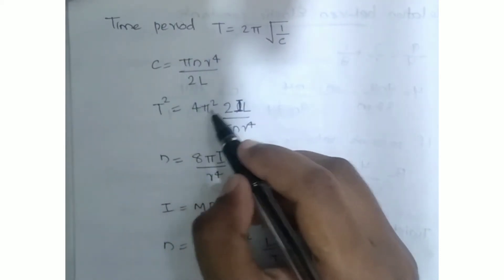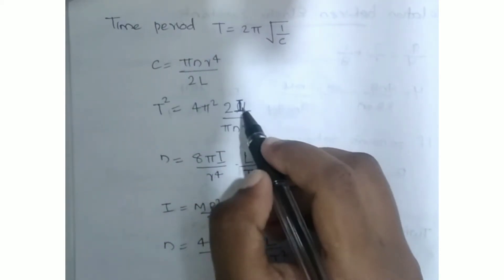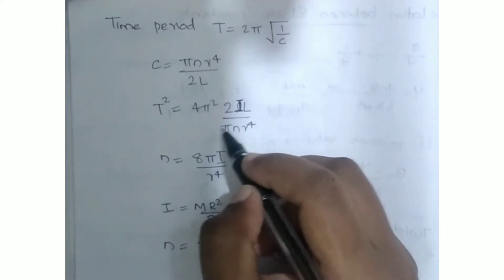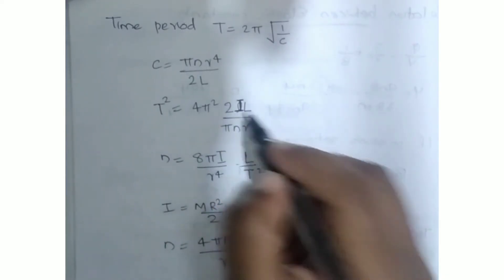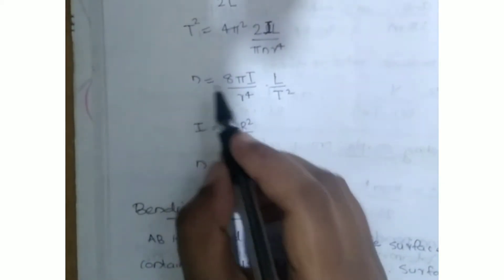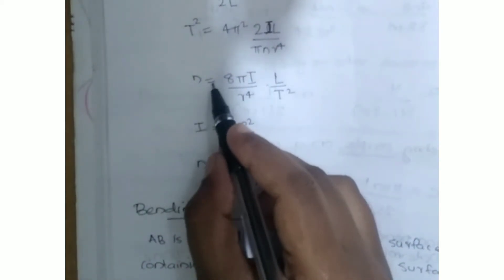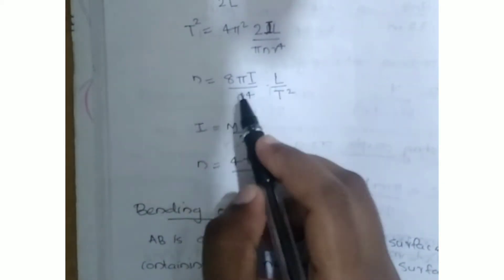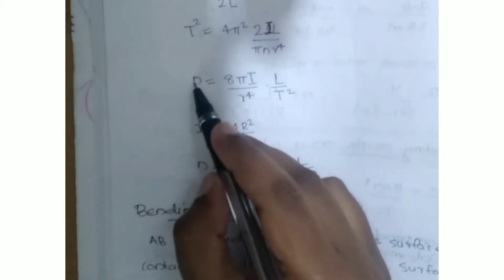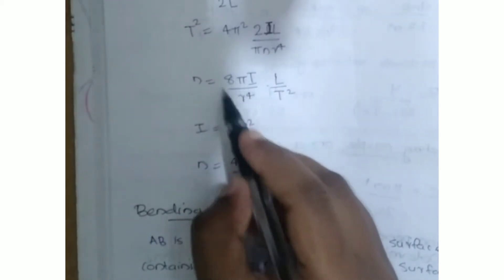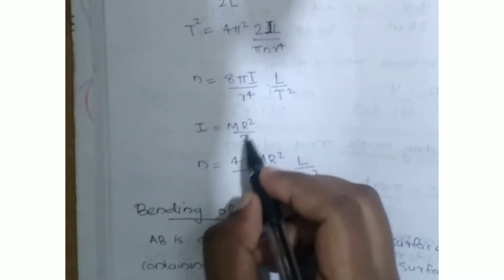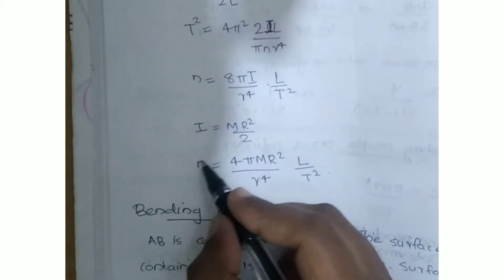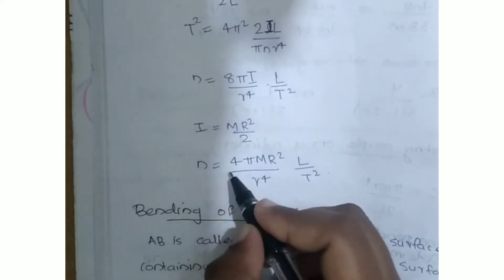The time period T is equal to 2 pi into the square root of I by C. Here, C is equal to pi n r to the power 4 divided by 2L. So T squared equals 4 pi squared times I times L divided by pi n r to the power 4. The moment of inertia I equals mr squared by 2.